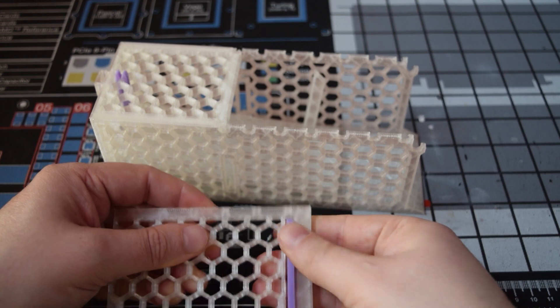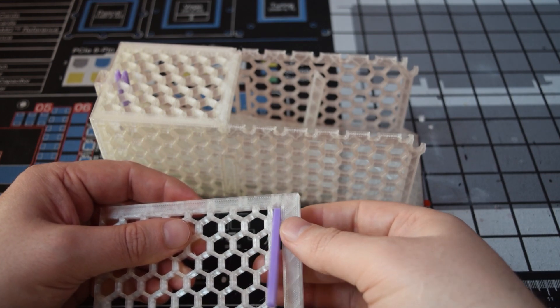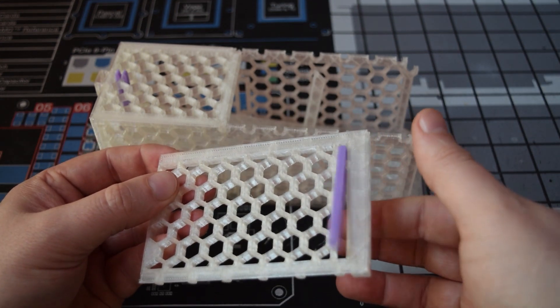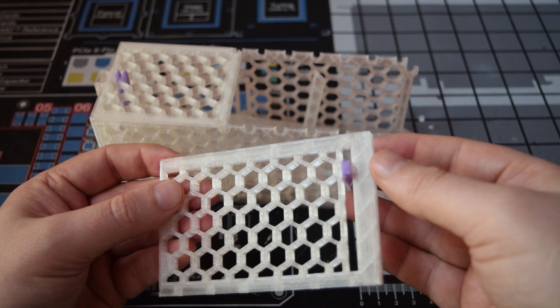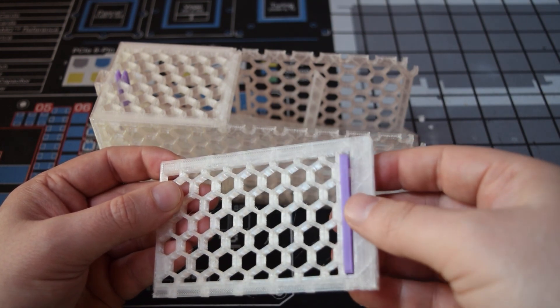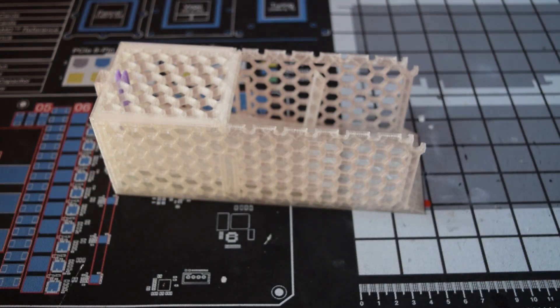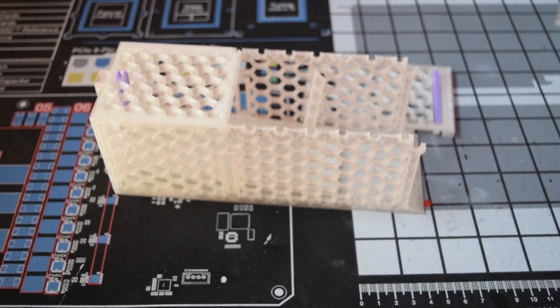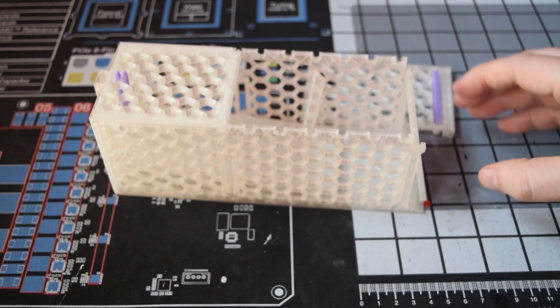This purple bit we're adding in here is kind of the locking mechanism, so when the door closes that will actually stop the door from opening back up. And yeah, we're actually almost done putting this together. We've got to put the front door on and then once we've done that, put the top on, and that's it—it'll be all complete.